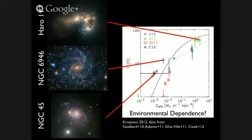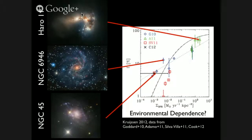As a visual example: at low star formation rate density, in flocculent, low-mass spiral galaxies like NGC 45, you have a lower fraction of stars bound up in clusters. As you go to more extreme environments, topping out at giant merging galaxy systems, you find a very high fraction of mass being formed in bound clusters.